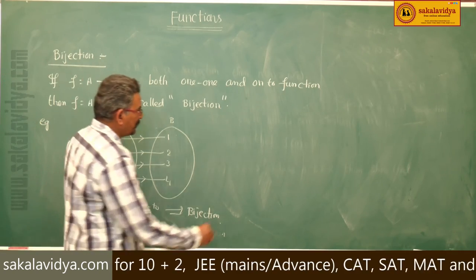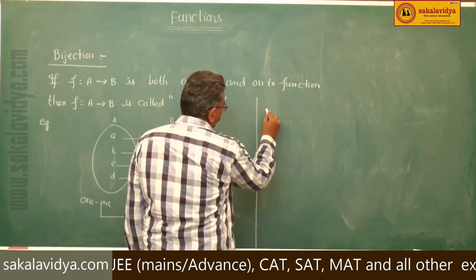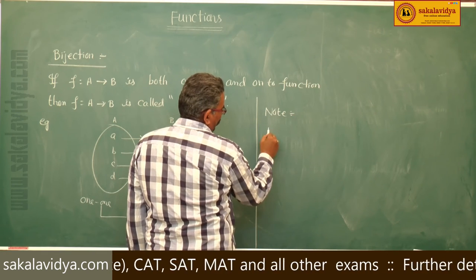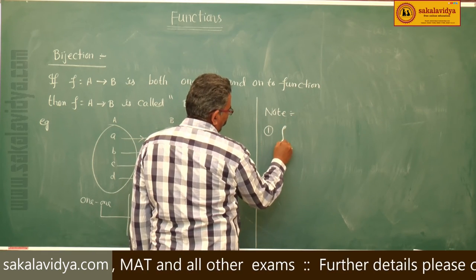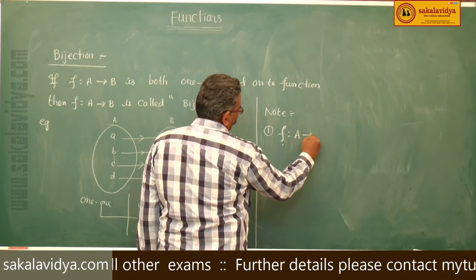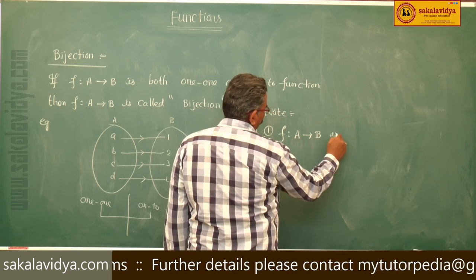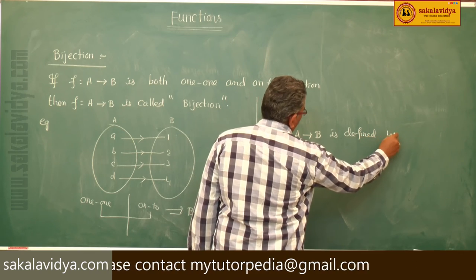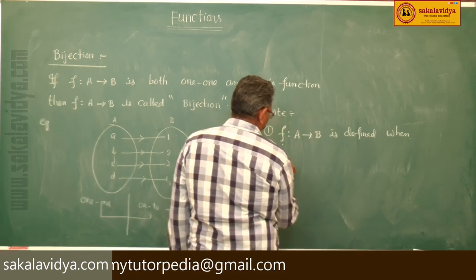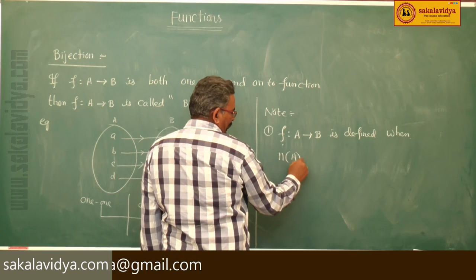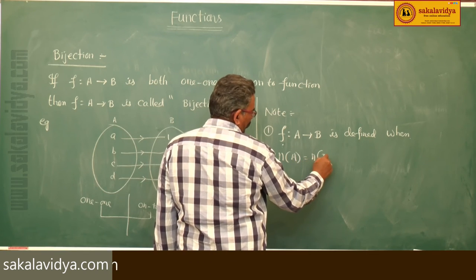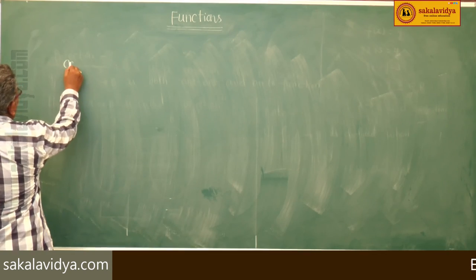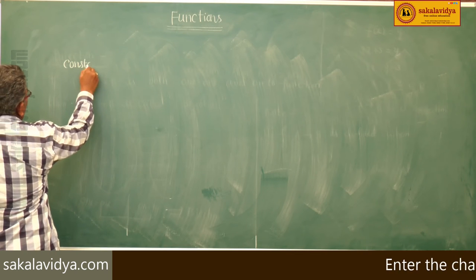f maps A to B is defined as a bijection when the number of elements in A equals the number of elements in B.